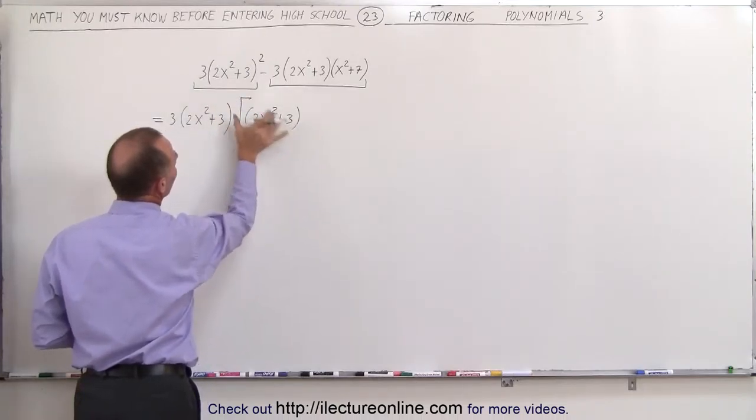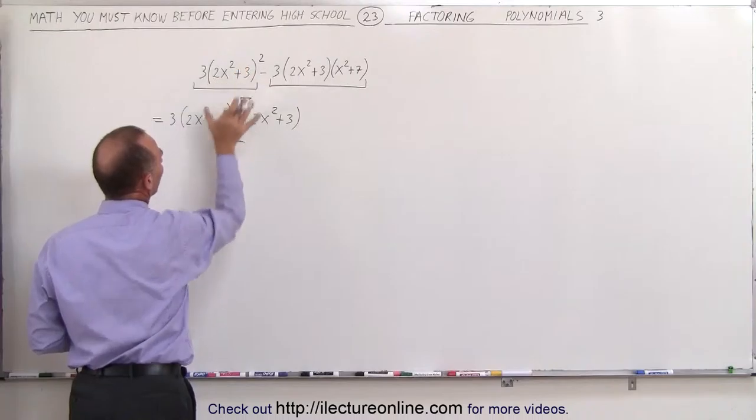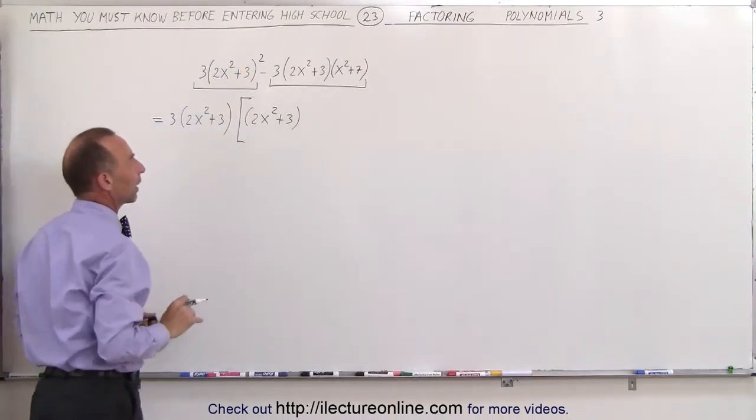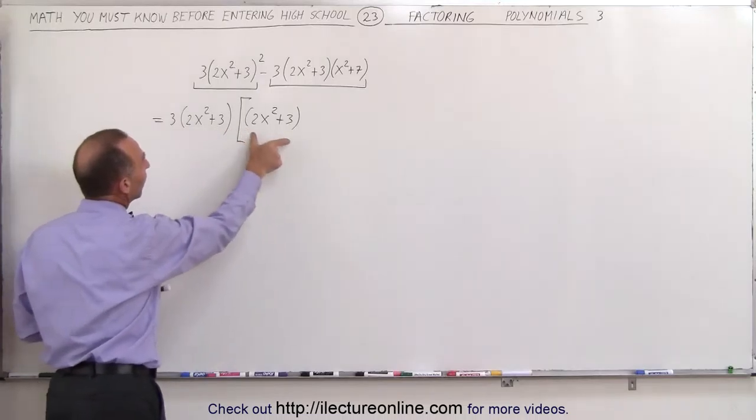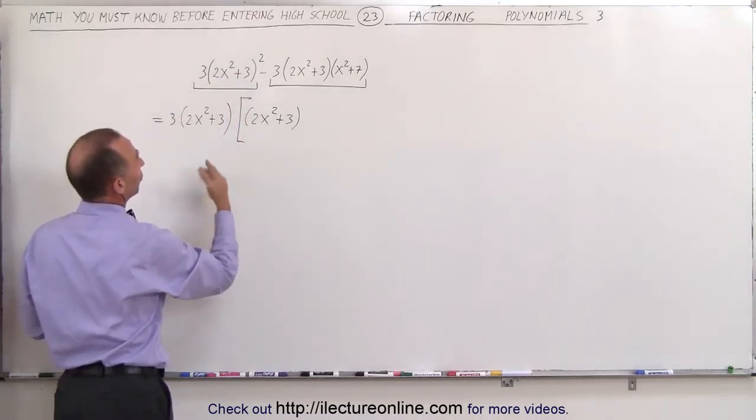And for now, I'll put parentheses around it, realizing that this is the remainder when we factor out this quantity right here. If you're not sure, then you can multiply this back together to see if you end up with the original term, and sure enough,